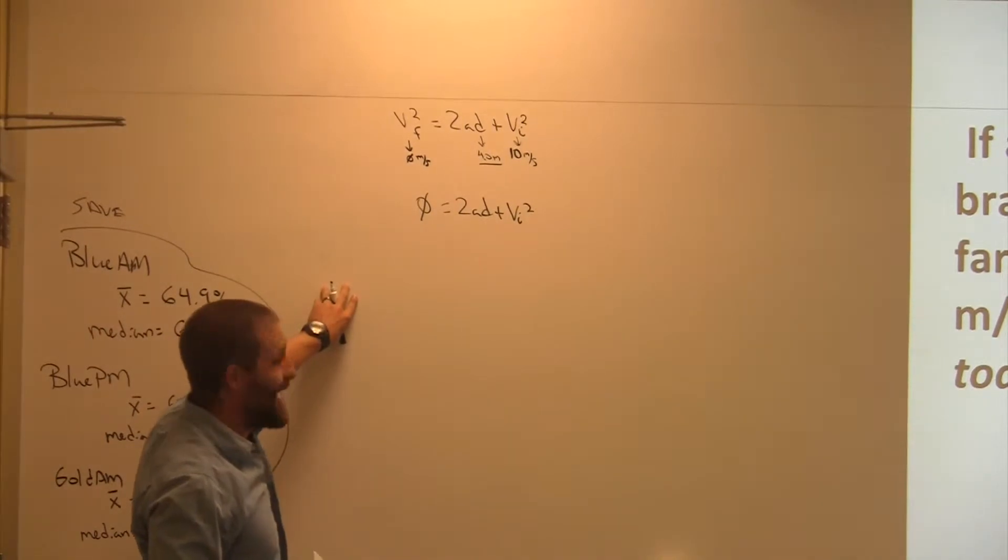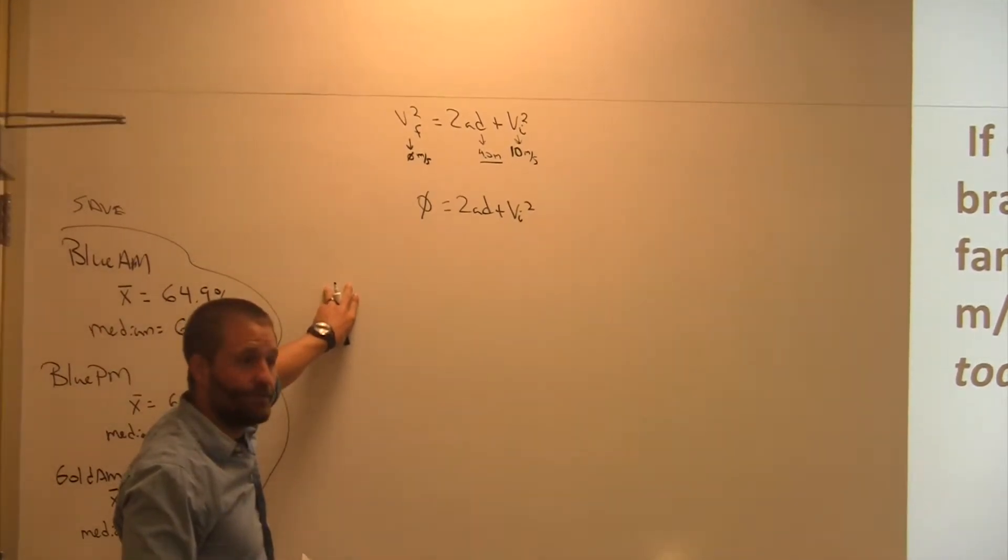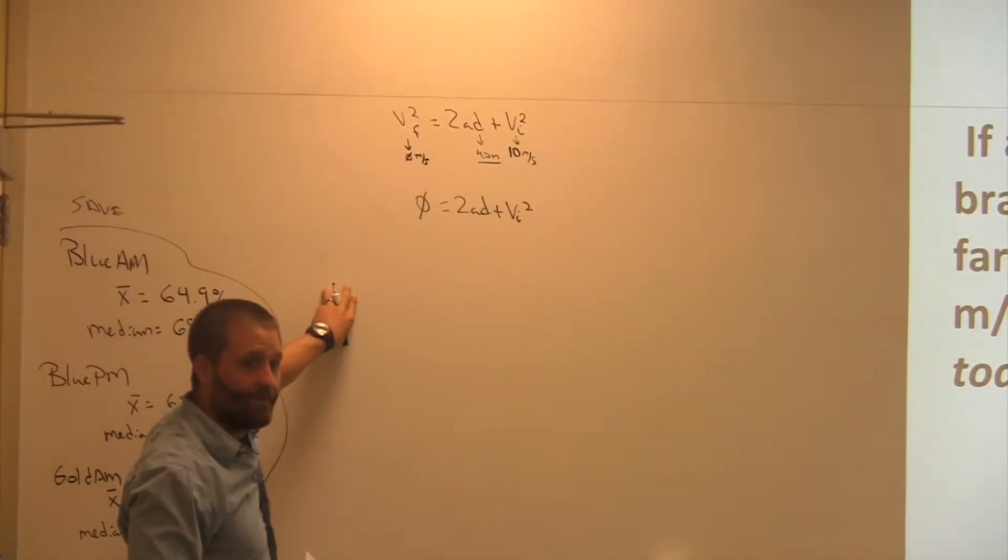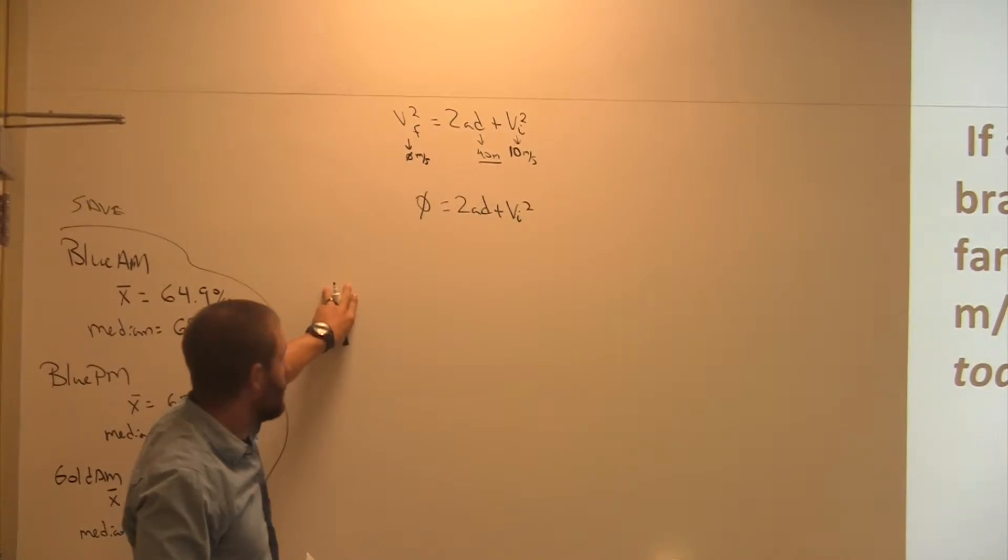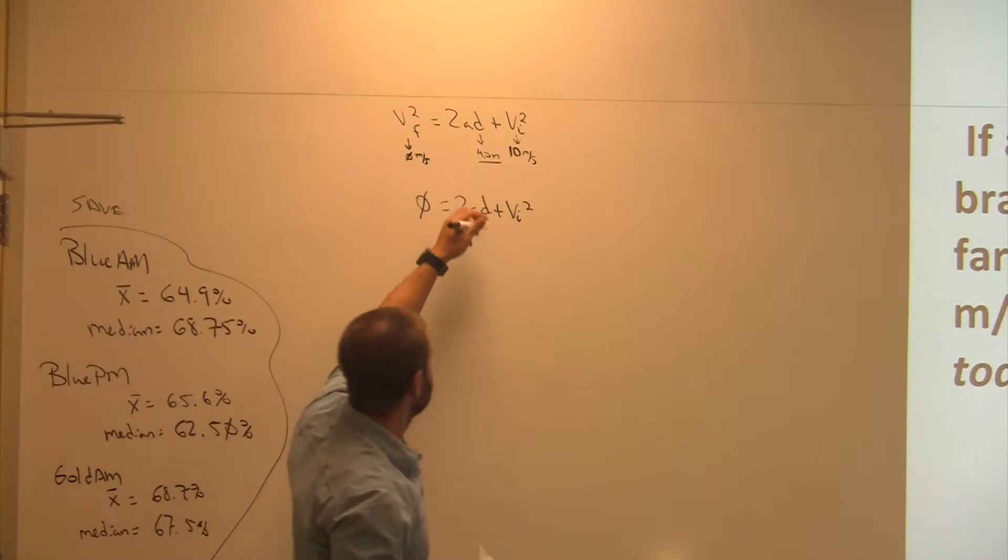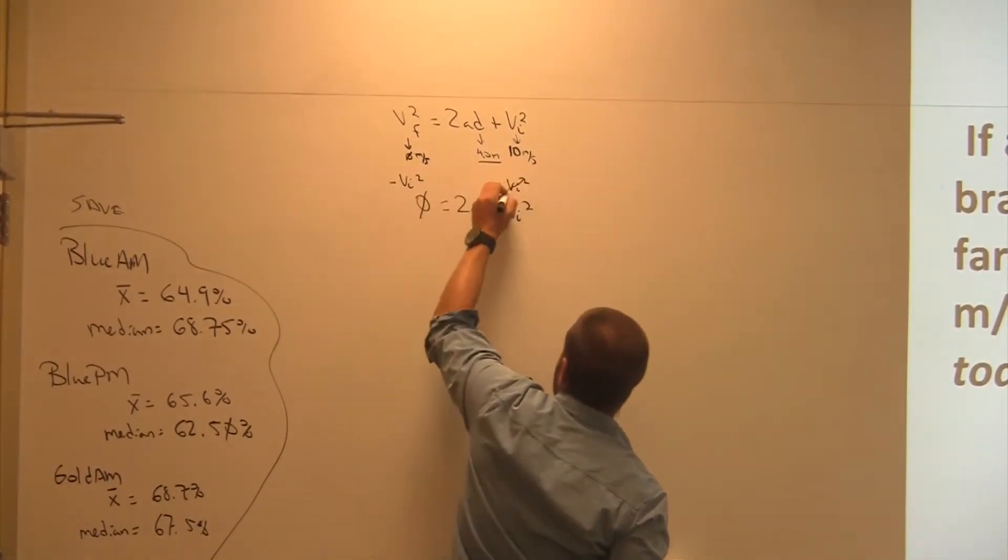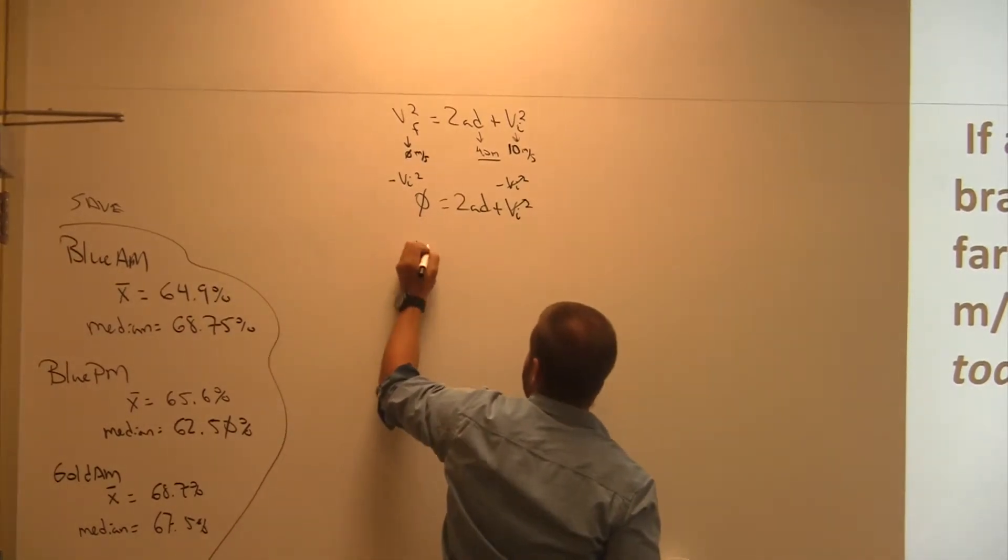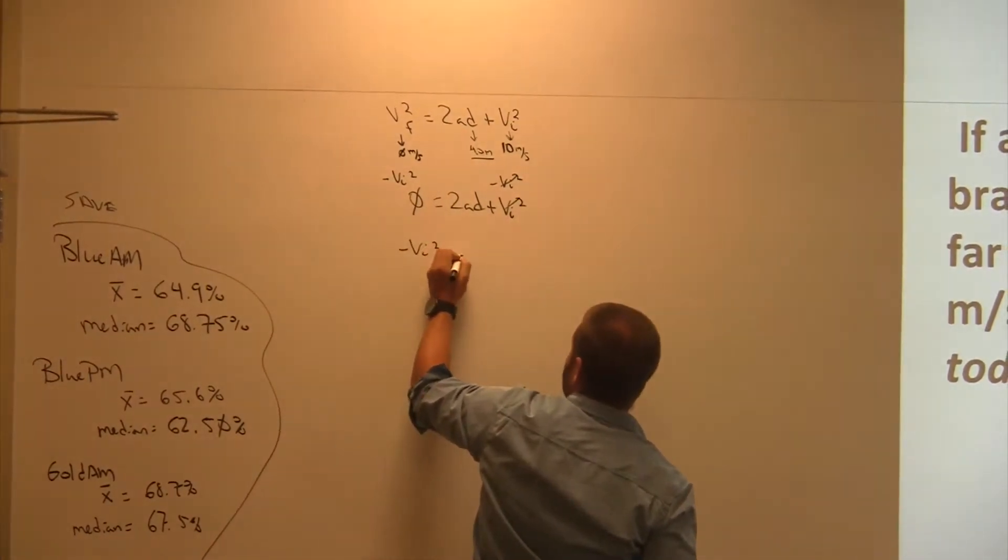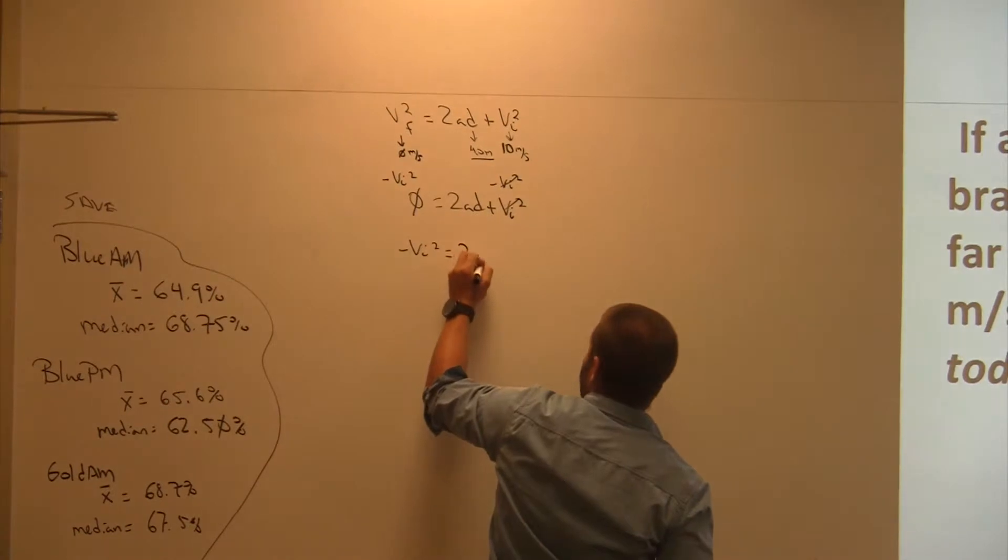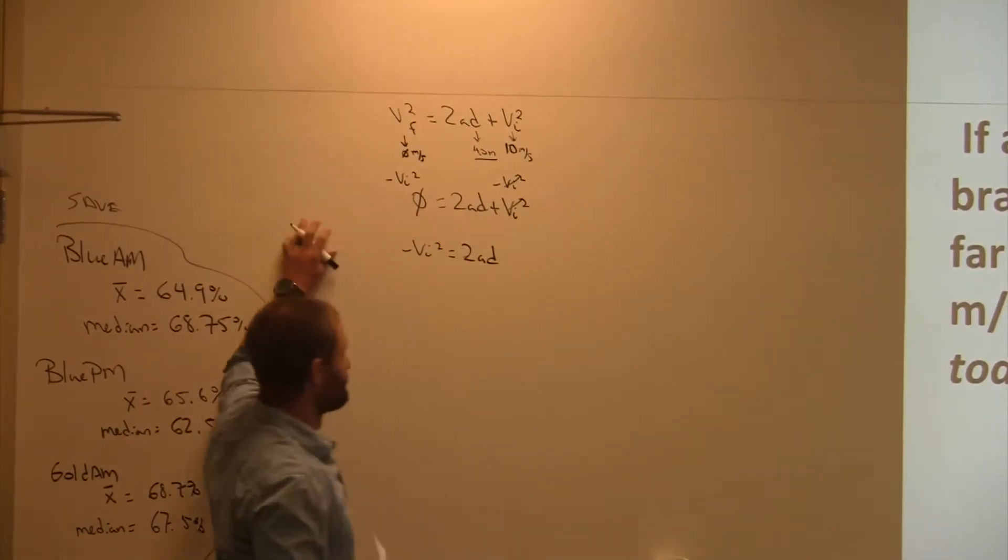Now, I want to get A by itself. What's the first thing I want to do? Subtract. Subtract what? Negative V I squared on both sides of the equation, right? This cancels, leaving me with negative V I squared equals 2AD. Everybody follow me there? Yep.